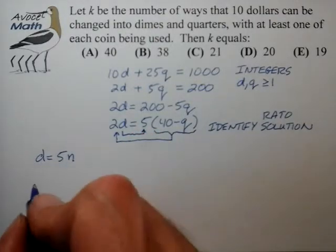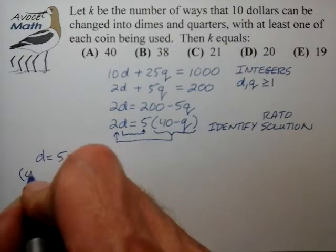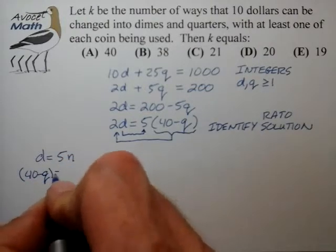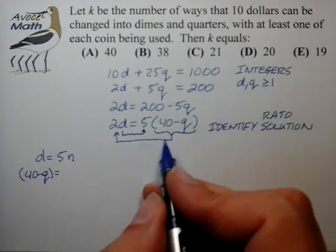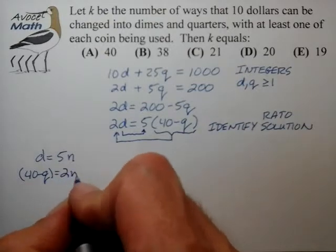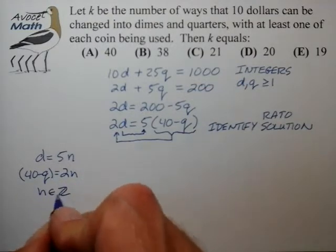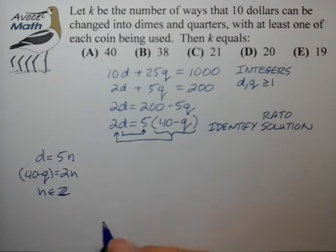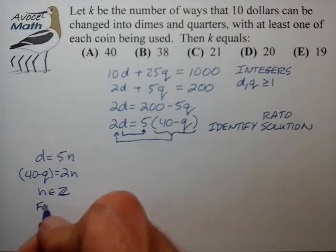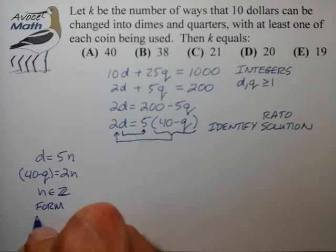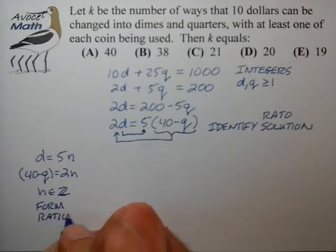And the grouping 40 minus q can be written as some multiple of 2, which is 2n, where n is again some integer. And I typically call this step form the ratio solution.